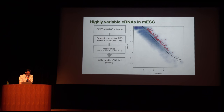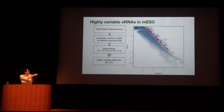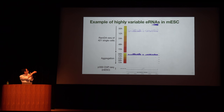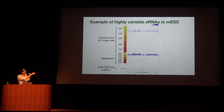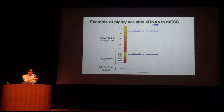Furthermore, we strictly searched for highly variable eRNAs in ES cells. The x-axis is mean and y-axis is CV. Highly variable eRNAs are detected by an outlier detection method; the red ones are highly variable eRNAs, totaling 137 loci. Here is an example: the upper track is the RamDA-seq data for each of 421 single cells, where each pixel represents each cell. Below is an aggregation plot at each time point and P300 ChIP-seq data.